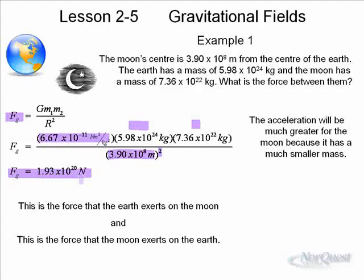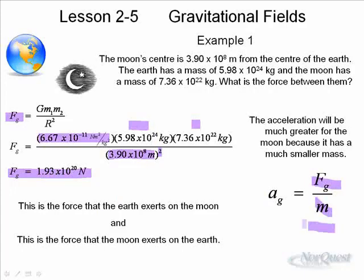The acceleration will be much greater for the Moon because it has a smaller mass — that's why the Moon goes around the Earth rather than the Earth going around the Moon. Since the forces are the same, a bigger mass gets a smaller acceleration, and a smaller mass gets a bigger acceleration.